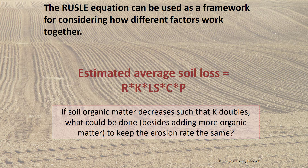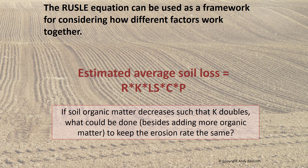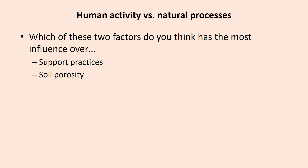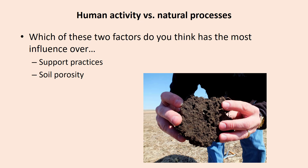Which factors are farmers most likely to be able to influence? K, C, and P. For each item, decide if you think it is influenced more by human activity or natural processes. Support practices — human. Soil porosity — this can be both.